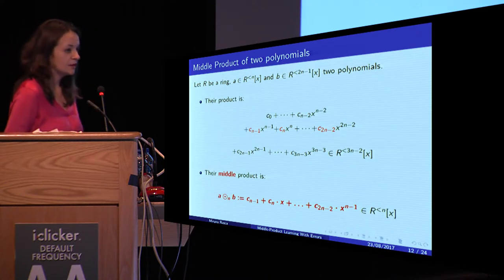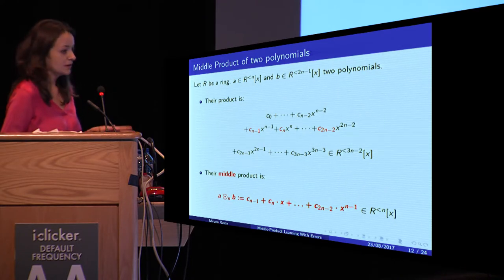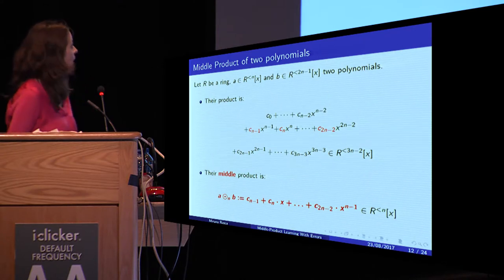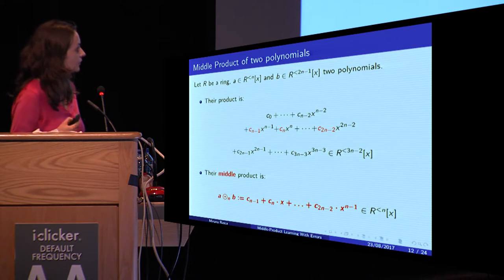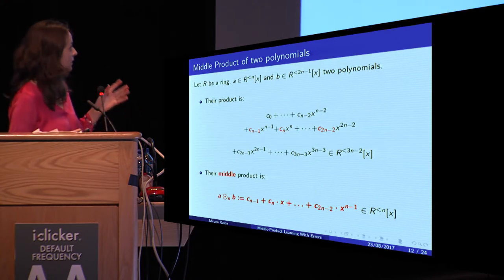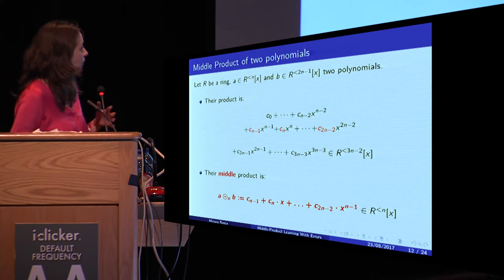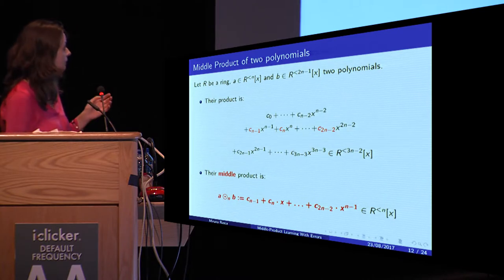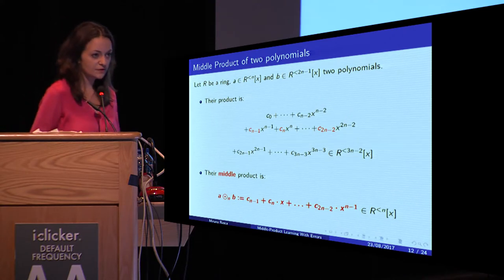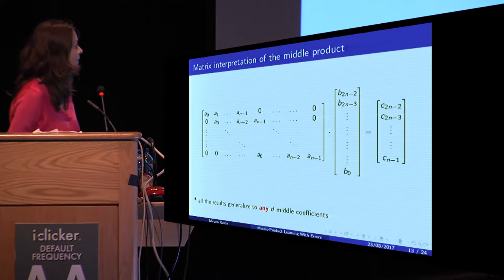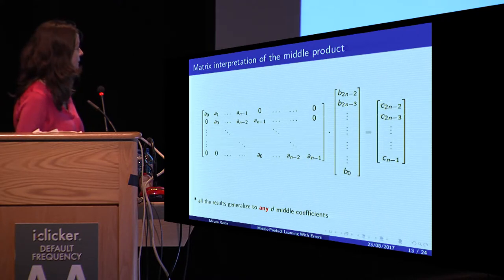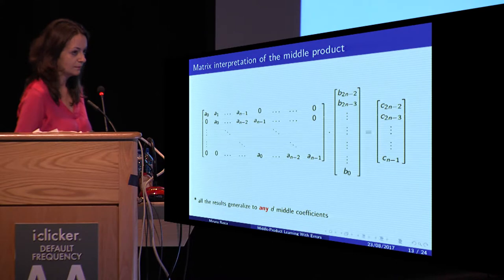Suppose we have two polynomials: A of degree less than n, and B of degree less than 2n minus 1. In order to compute the middle product, we compute the usual product — this will be a polynomial of degree less than 3n minus 2 — and we take the middle n coefficients and create out of them a polynomial of degree n. We can take any middle coefficients. You can better visualize this by using matrices: the middle product of A and B corresponds to the multiplication of a Toeplitz matrix related to A and the reversed vector of coefficients of B.